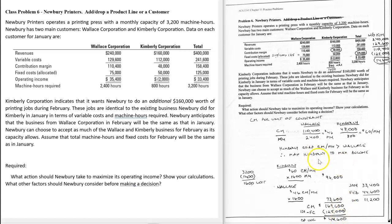Other factors to consider: what about the Wallace customers? What if they decide, 'You mean you're not going to supply me this month?' How often would you let that happen to you as a customer? They might lose a lot of business there. Also, the Kimberly job is only for one month — so what happens in the following month?